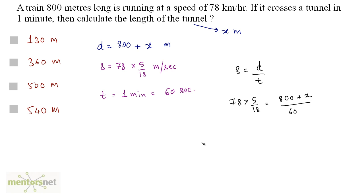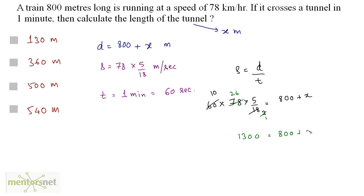Moving 60 to the left and multiplying: 6 times 10 is 60, 6 times 3 is 18, and 3 times 26 is 78. So we have 10 times 26 times 5, which equals 1300, and that equals 800 plus x. Therefore x equals 1300 minus 800, which is 500 meters. The length of the tunnel is 500 meters.